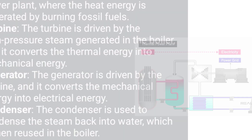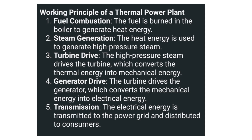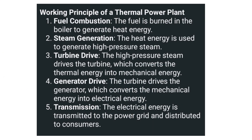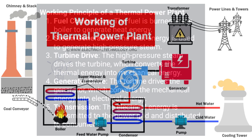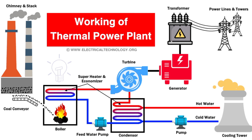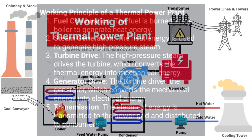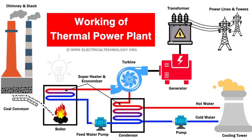Regarding the working principle of the thermal power plant: first, we burn the fuel in the boiler to generate heat. Then the heat energy is used to generate high-pressure steam. The high-pressure steam drives the turbine, which converts thermal energy into mechanical energy. Finally, the turbine drives the generator, which converts mechanical energy into electrical energy.